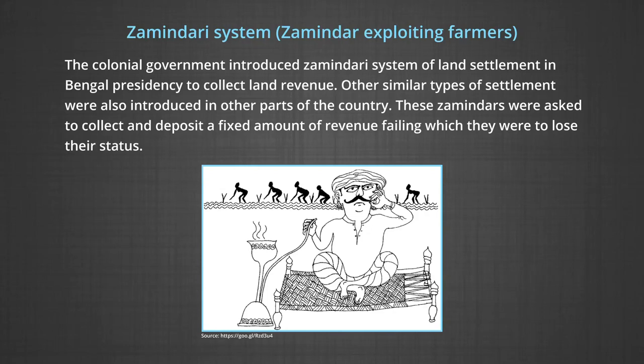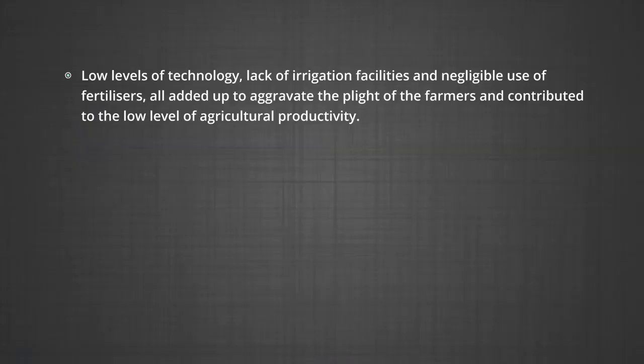Third, both these factors created heavy population pressure on agriculture, with 85 percent of the population depending on this sector. At the time of independence, this figure was nearly 75 percent, which was still very high. Heavy population pressure was responsible for large-scale unemployment as well as underemployment. Fourth, the colonial government introduced the Zamindari system of land settlement in Bengal Presidency to collect land revenue. Other similar types of settlement were also introduced in other parts of the country.